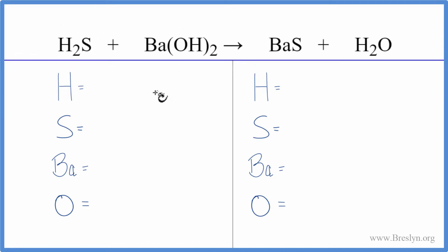Let's count the atoms up on both sides of the equation and balance it. We have two hydrogens, but we need to count the hydrogens over here. So we have one times two, that gives us two more. So we have four hydrogen atoms, one sulfur, one barium. In this two, it applies to everything in the parentheses here. So we have two times one, that gives us two oxygen atoms.